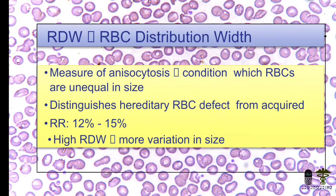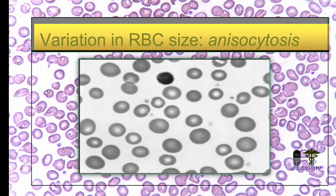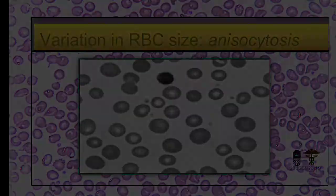The reference range of RDW is 12 to 15%. A high RDW means more variation in size. Here you can see the variation in size — the gray color shows normal RBC and the black color shows variation in size, meaning unequal RBCs.